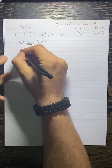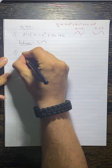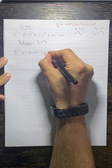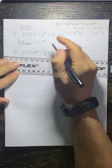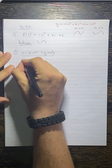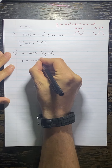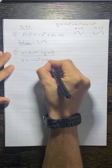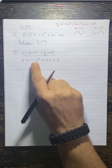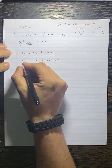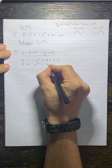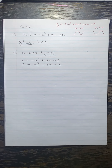The next thing we do is find the intercepts. The first thing I'm going to find is the x-intercept, and that happens when y is equal to zero. So we get zero is equal to minus x cubed plus 3x plus 2. I'm just going to divide through by the negative to make my highest power positive, so we get zero is equal to x cubed minus 3x minus 2.